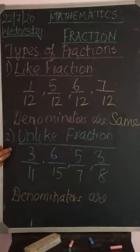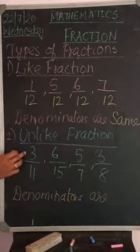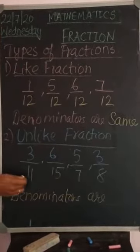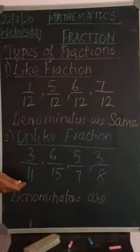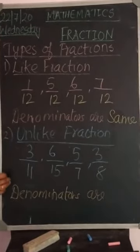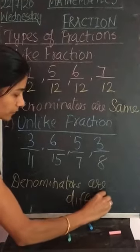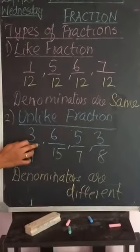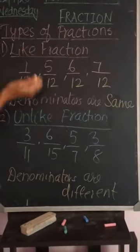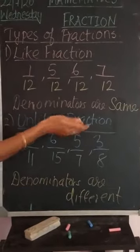Now, unlike fractions. What do you mean by unlike fractions? Can you observe these fractions: 3 by 11, 6 by 15, 5 by 7, and 3 by 8? What about the denominators here? These are all different. So fractions with different denominators are called unlike fractions.